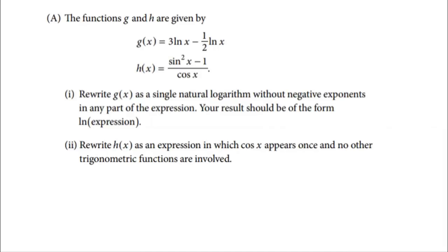Part A has two parts. Two functions G and H are given. The first part asks us to rewrite G of X as a single natural logarithm without negative exponents in any part of the expression — the result should be of the form natural log of an expression. The second part asks us to rewrite H of X as an expression in which cosine of X appears once and no other trigonometric functions are involved.